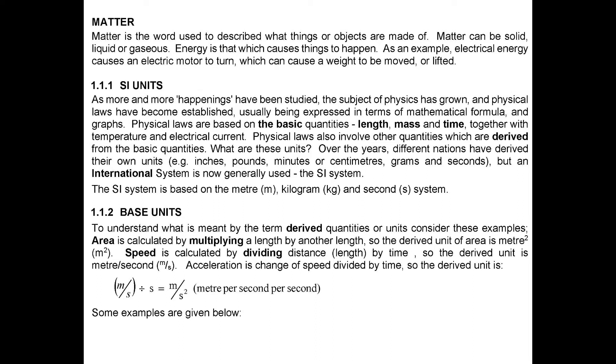Base units. To understand what is meant by the term derived quantities or units consider these examples. Area is calculated by multiplying a length by another length, so the derived unit of area is meter square. Speed is calculated by dividing distance, length, by time, so the derived unit is meter per second. Acceleration is change of speed divided by time, so the derived unit is meter per second per second. Some examples are given below.